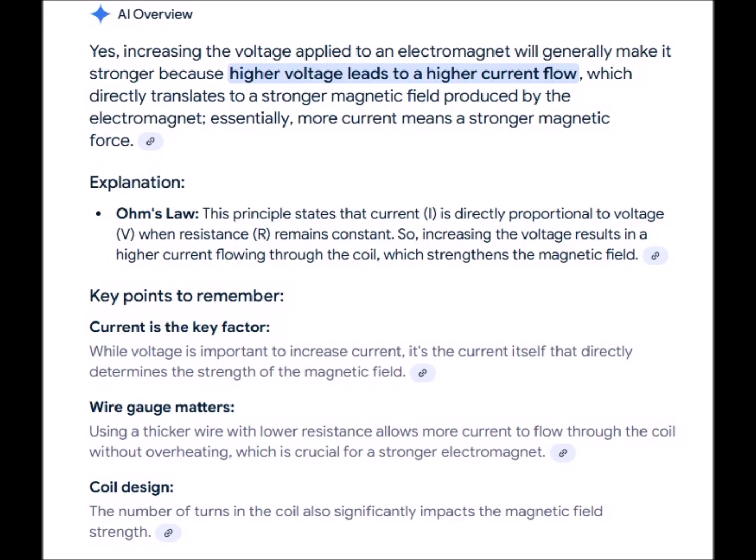We've just discussed heat management, but how do we enhance energy availability or current magnitude and therefore strength of an AC electromagnet?